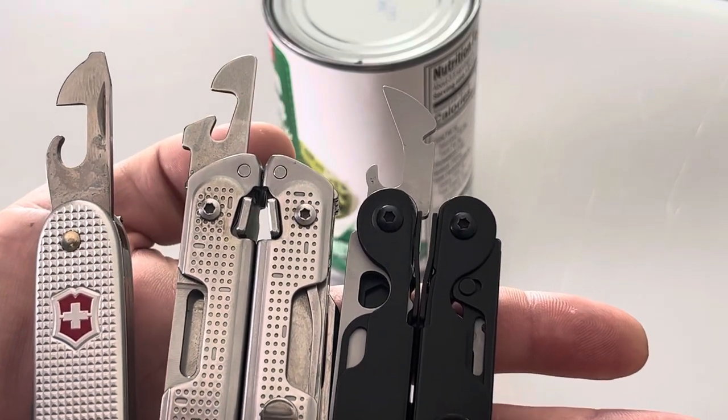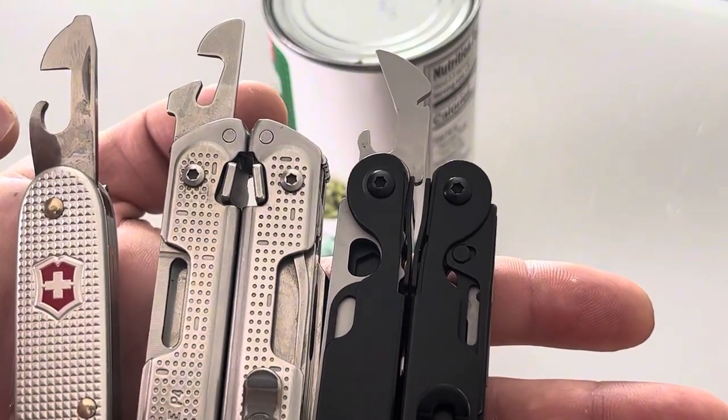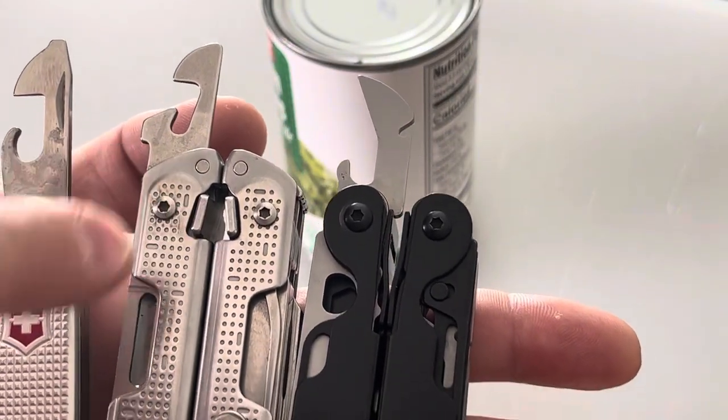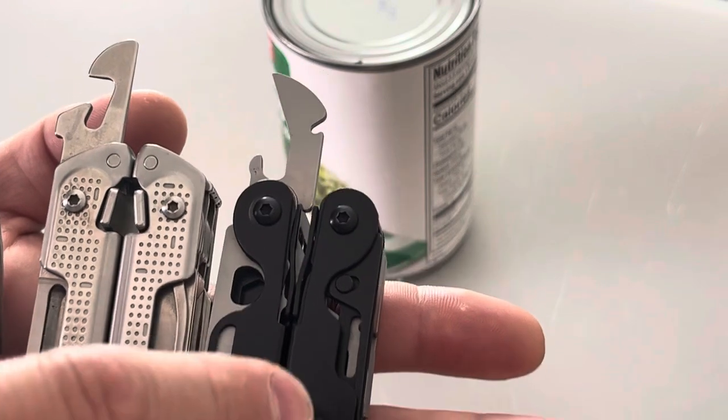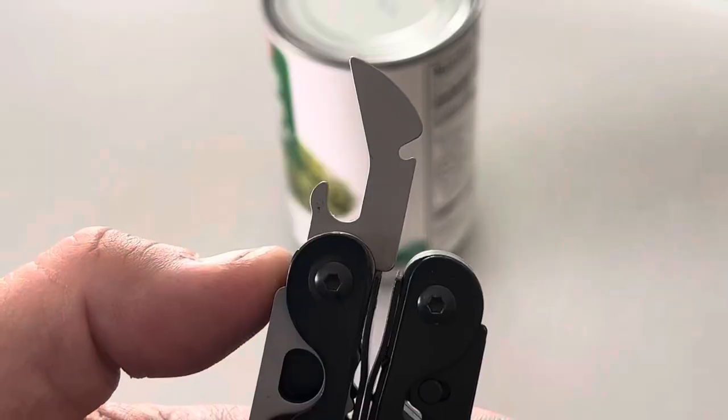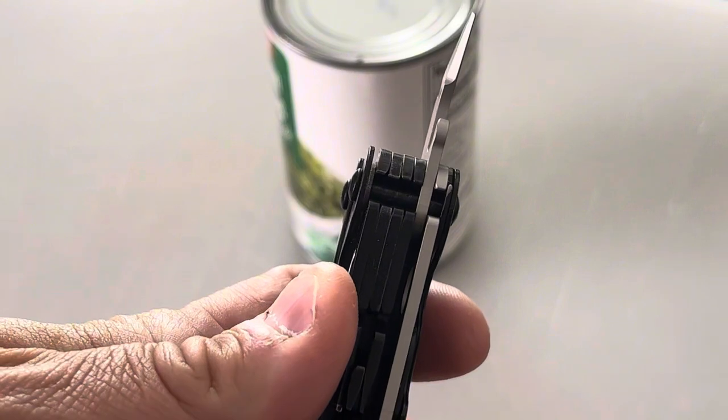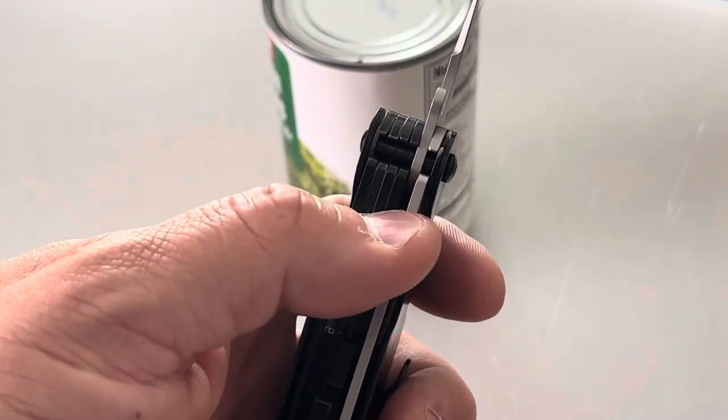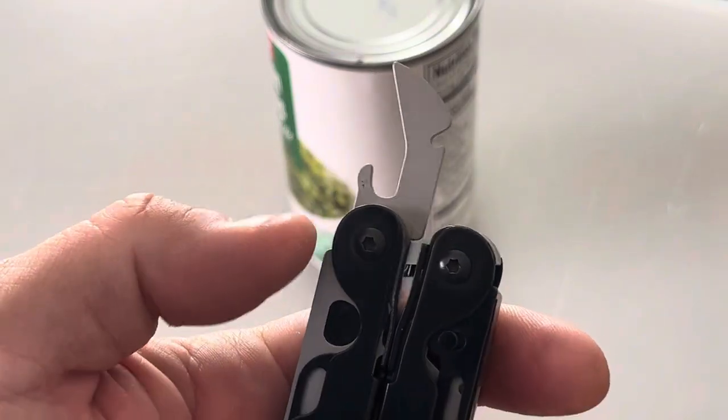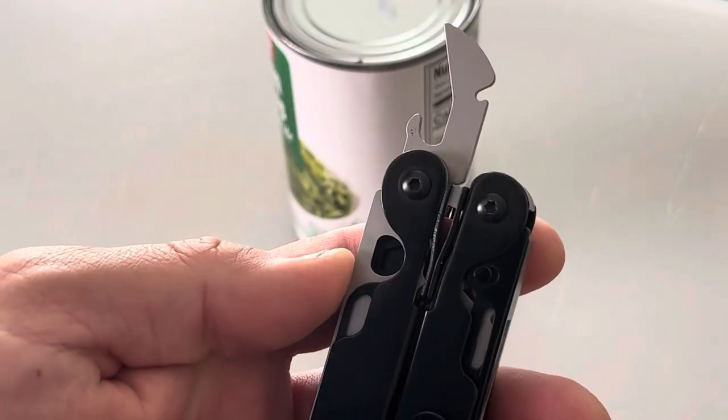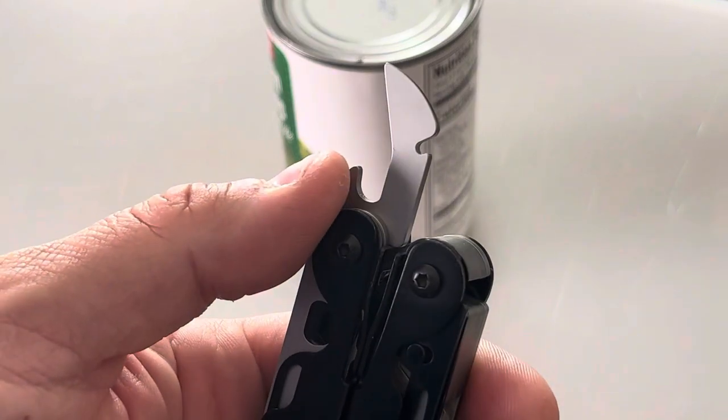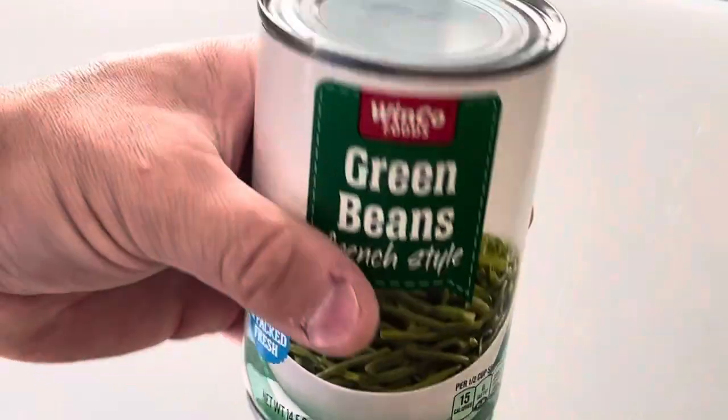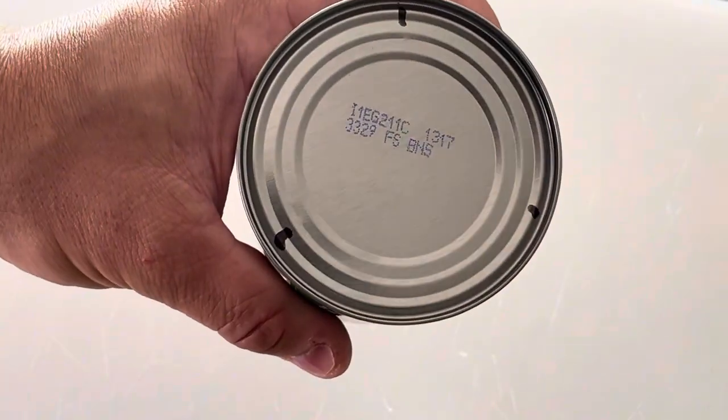We are going to test out three different can openers: the Victorinox style one on the Pioneer Alox, the Leatherman style one on the Free P4, and the new Goat multi-tool. Because the Goat is modular, I put it over on the edge right by the blade so it's in one of the shorter tool slots. I'm going to be opening this can of beans. On the top, I've marked about a third so each of them can do a third of a can.